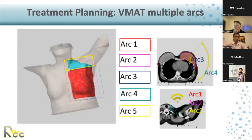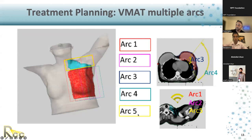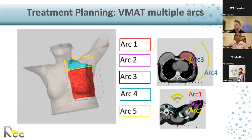If there's IMN involvement or you want to cover the IMNs, this five-arc arrangement works as well. When you have nodes and break it down with the five-arc technique, you can more easily push dose to those nodes. With two arcs it would be simpler but harder to control. This type of beam arrangement gives us a little more control of the VMAT optimization technique, and there are other configurations that can be used as well.